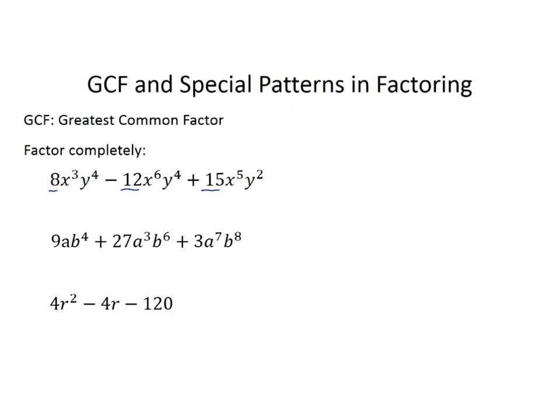Now let's look at our variable terms. We have x to the third, x to the sixth, and x to the fifth — they all have at least x to the third, so we're going to factor out x cubed. For the y terms, we have y to the fourth, y to the fourth, and y squared — they all have at least y squared, so we're going to factor that out too.